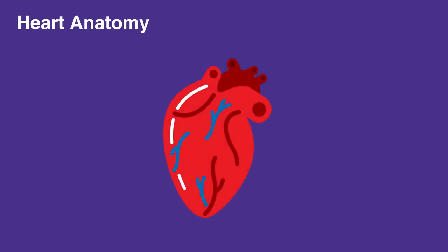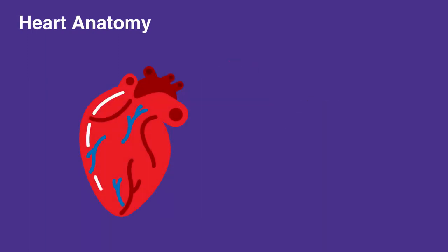The heart is a hollow muscle comprised of four chambers that are all surrounded by thick walls of tissue called septum. The two upper chambers are the atria, and the two lower chambers are the ventricles.